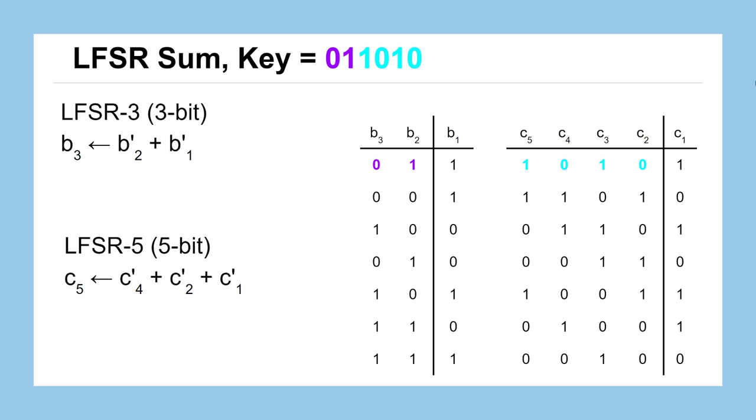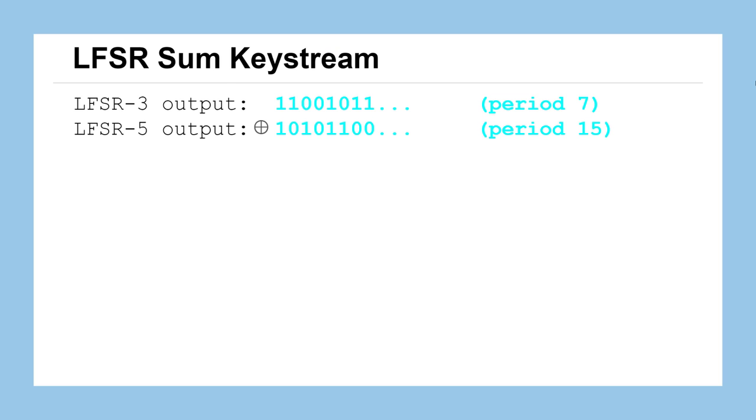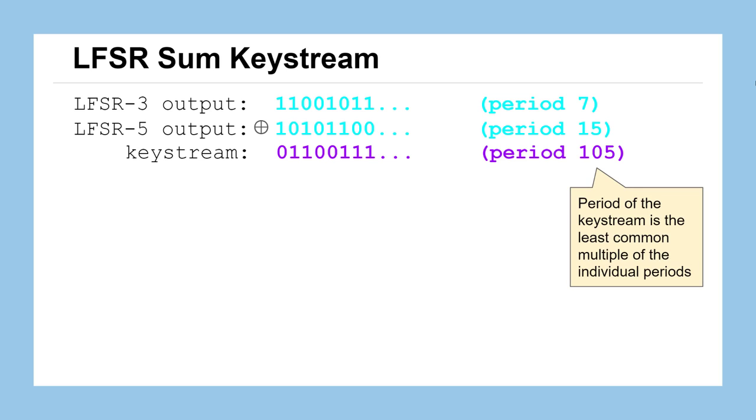Now we have two output streams, one for each of these LFSR systems. We'll line up our outputs. We'll notice that the LFSR-3 has a period of 7, meaning every 7 bits we come back to the beginning of the cycle and the next 7 bits will be the same as the 7 bits that preceded it. Our LFSR-5 has a period of 15. If we XOR these two output streams together, we'll get the keystream that we'll actually use for encryption. This keystream has a period of 105, and that 105 comes from it being the least common multiple of the individual periods - 7 and 15.